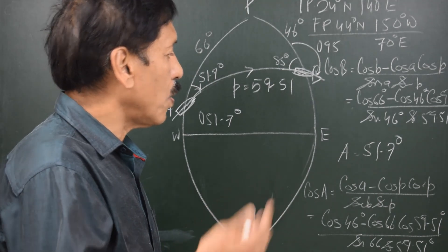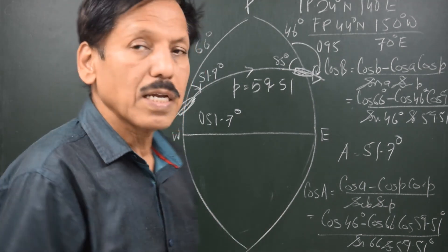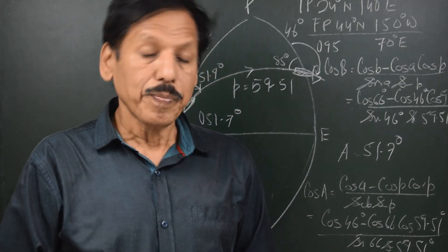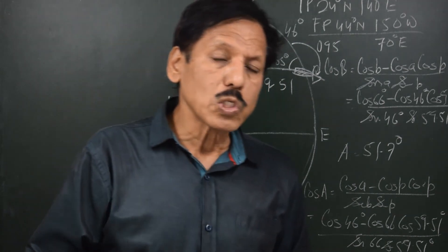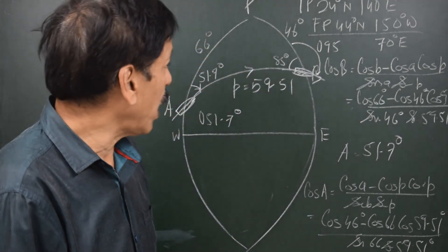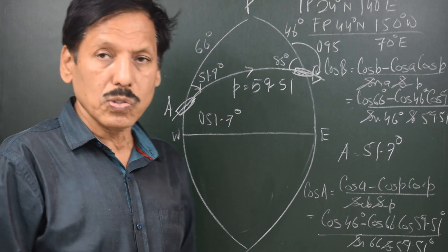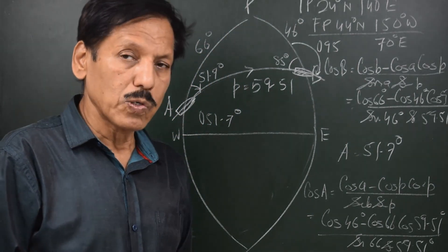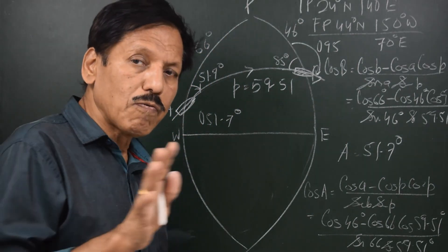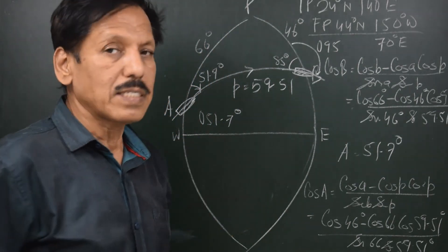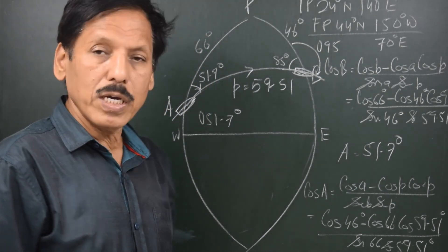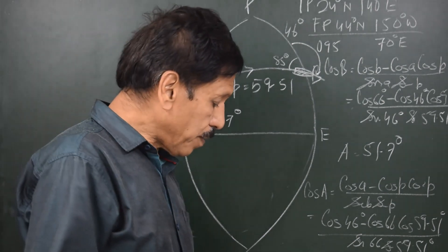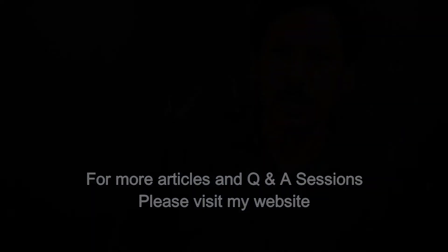This is how a simple great circle sailing question is solved. We can also find the initial and final course without first finding the great circle distance, using the four-part formula.